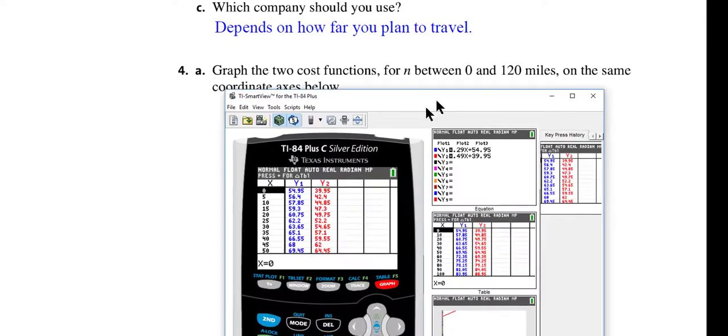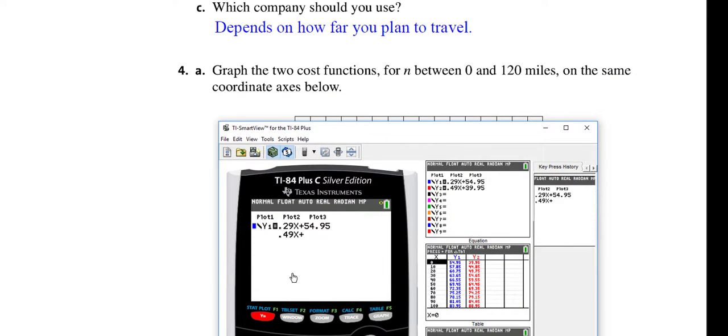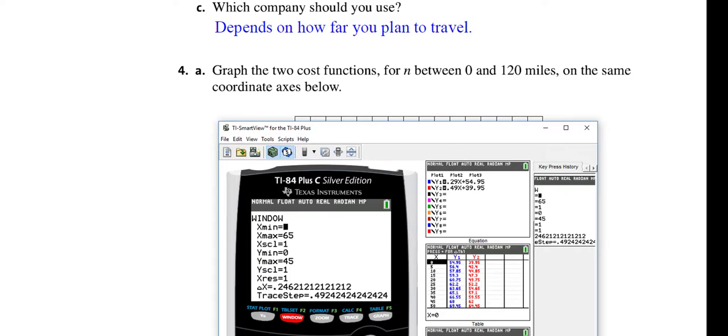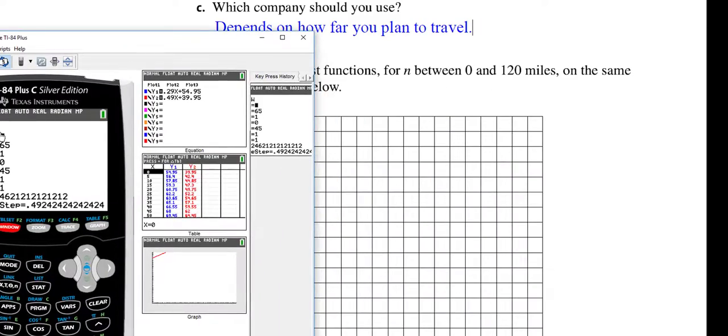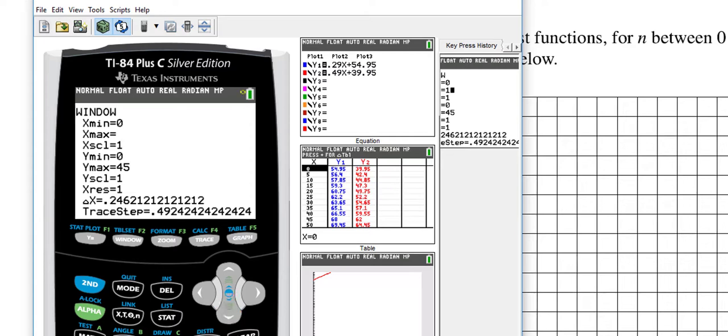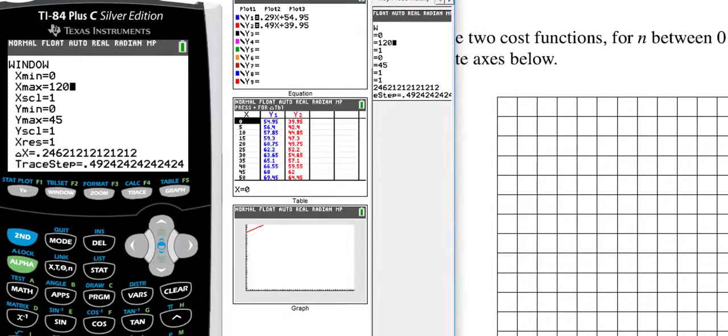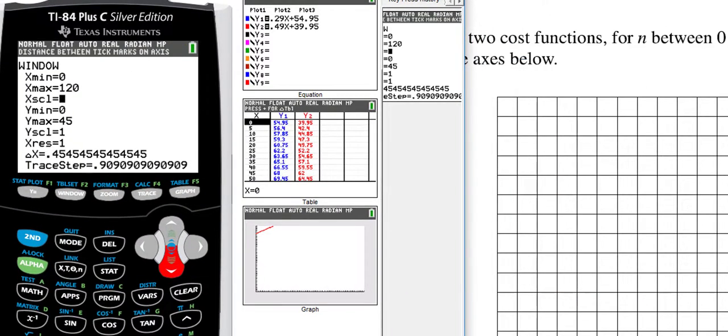Now it says we should graph this. So we already have the equations in our Y1 and Y2, and they help us out with the window. They say for N is between 0 and 120. So if I press the Window key, I'm going to start at 0 and go to 120. And I guess I could count by 10s. That would give me 12 tick marks. So I'm going to count the increments of 10. That's what this X scale does for me.